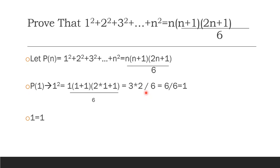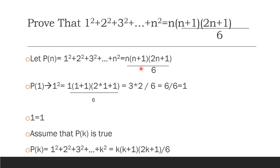Now assume that P of K is true. This means: 1 squared plus 2 squared plus 3 squared plus ... plus K squared equals K times K plus 1 times 2K plus 1, divided by 6.